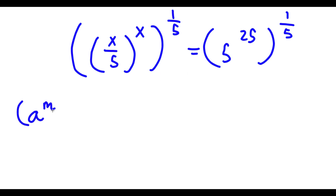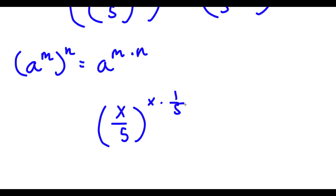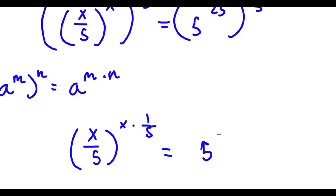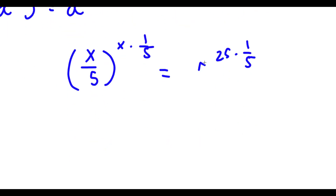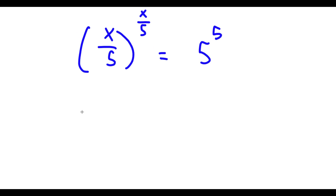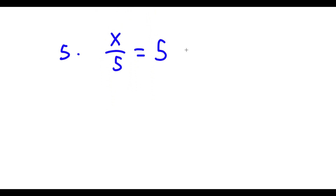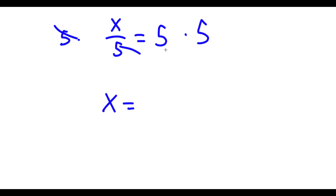If I have something in the form a to the power of m to the power of n, this equals a to the power of m times n. So x over 5 to the power of x times 1 over 5 equals 5 to the power of 25 times 1 over 5. Now x times 1 over 5 equals x over 5, and 25 times 1 over 5 is the same as 25 divided by 5, which is 5. So now, if a to the power of a equals b to the power of b then a equals b. Here x over 5 to the power of x over 5 equals 5 to the power of 5, meaning x over 5 equals 5, so x equals 25.